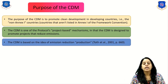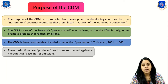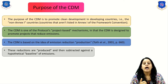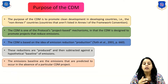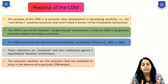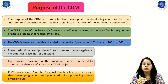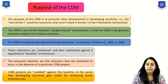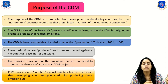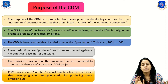In CDM, the concept is based on the idea of emission reduction production. These reductions are produced and then subtracted against a hypothetical baseline of emissions. The emission baseline represents the emissions predicted to occur in the absence of a particular CDM project. CDM projects are credited against their baseline, meaning developing countries are credited for producing these emission cuts.